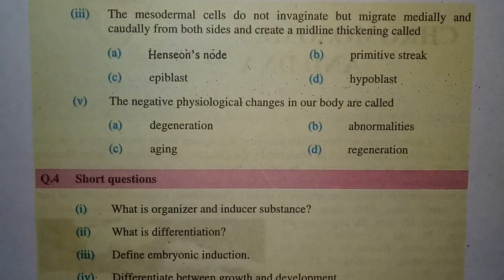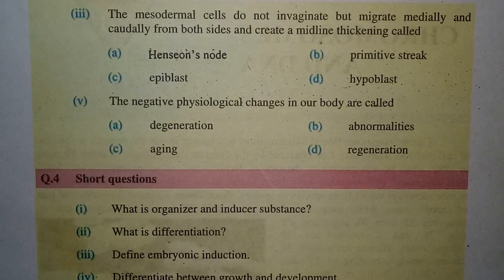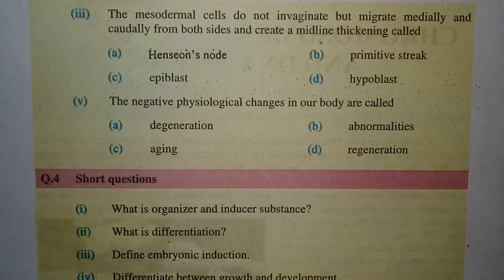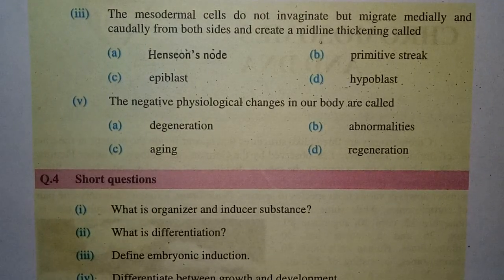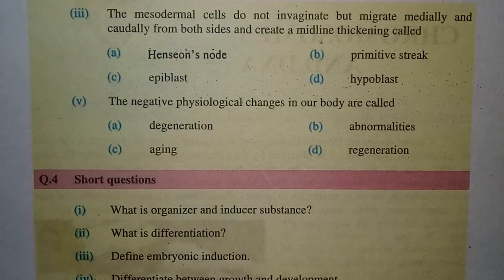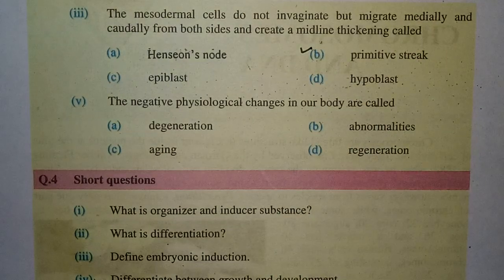The third MCQ: mesodermal cells do not invaginate but migrate medially and cordially from both sides and create a midline thickening cord. This is talking about the development of different cells. The right answer is B: primitive streak. Hanson's node, epiblast, and hypoblast are the wrong options.